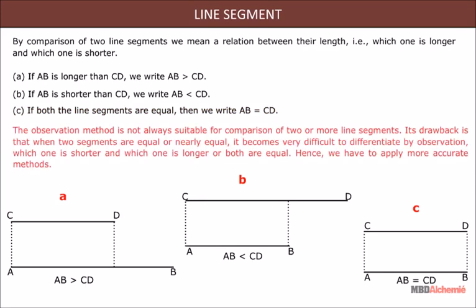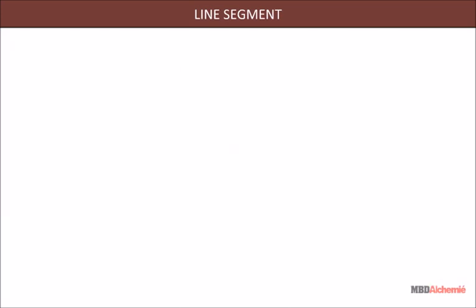The observation method is not always suitable for the comparison of two or more line segments. Its drawback is that when two segments are equal or nearly equal, it becomes very difficult to differentiate by observation which one is shorter, which one is longer, or whether both are equal. Hence we have to apply more accurate methods.